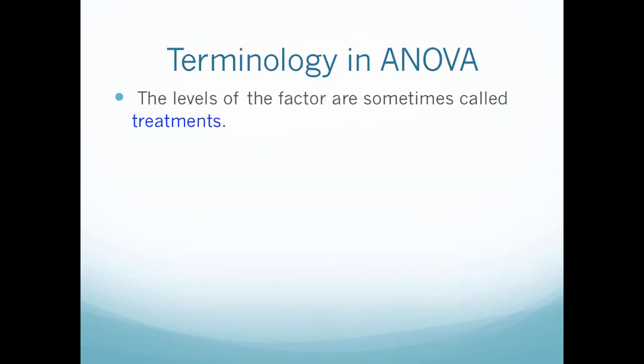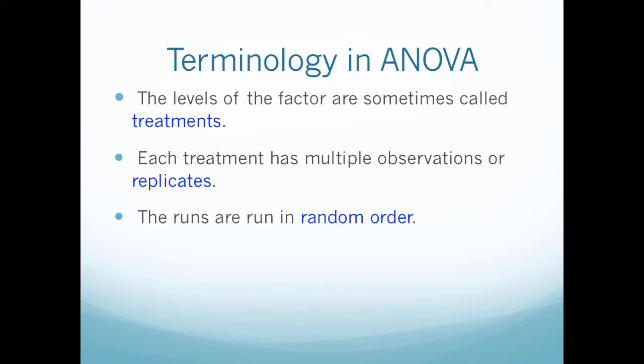So some terminology that we're going to hear. The level of the factor are sometimes called treatments, and we're going to refer to that in our book. So we will call them factors or treatments. Each treatment has multiple observations or replicates, and replicates are one person or one subject doing multiple things. The runs that we're going to perform or the number of experiments we're going to perform are run in random order. So we want them to be independent variables. We don't want them to have to be in a specific order.